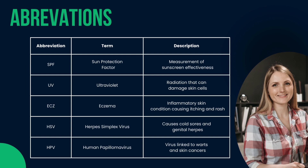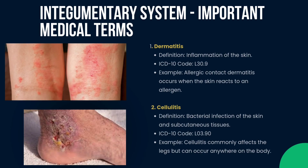Now we'll see the medical conditions in detail. Dermatitis is inflammation of the skin — an image is provided. Example: contact dermatitis occurs when the skin reacts to an allergen. Next is cellulitis — a bacterial infection of the skin and subcutaneous tissue. Example: cellulitis commonly affects the leg but can occur anywhere on the body.